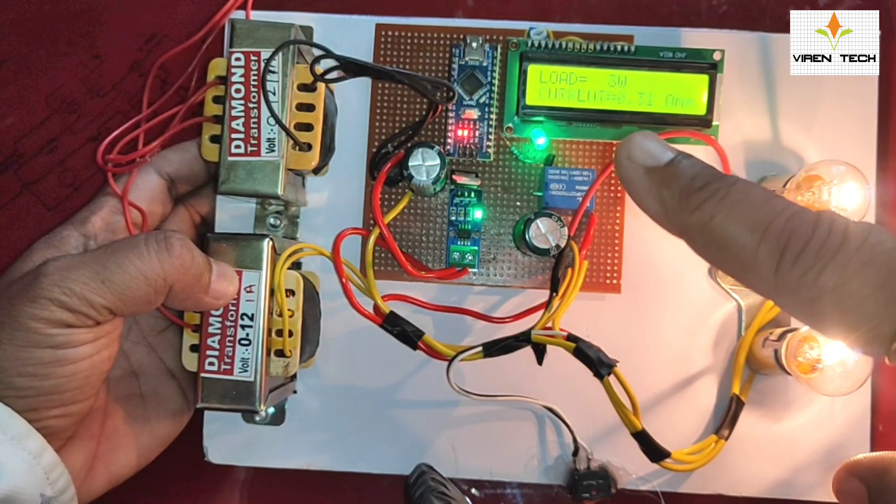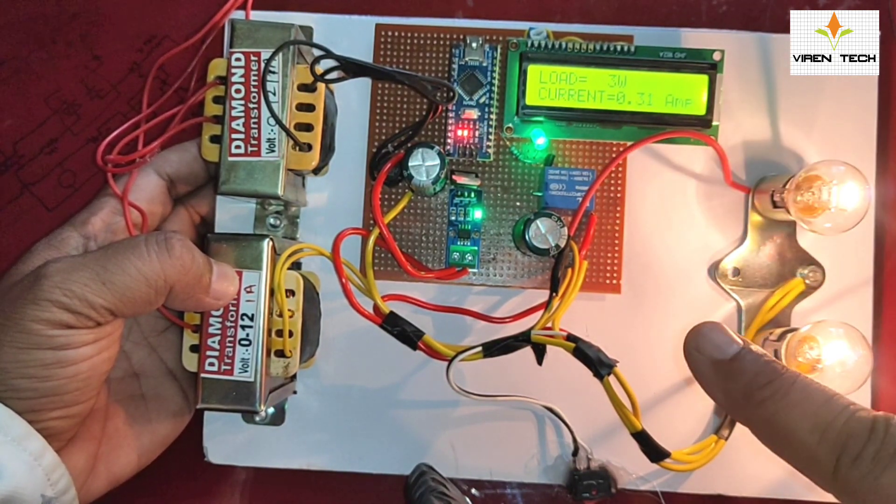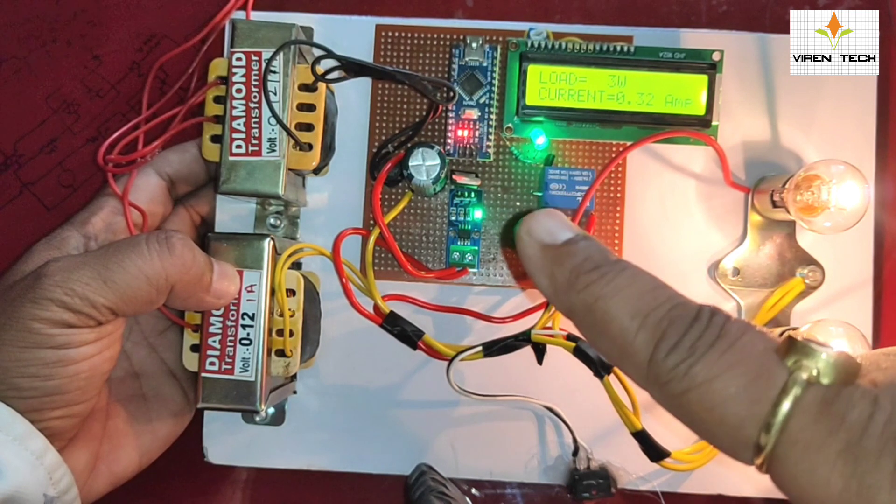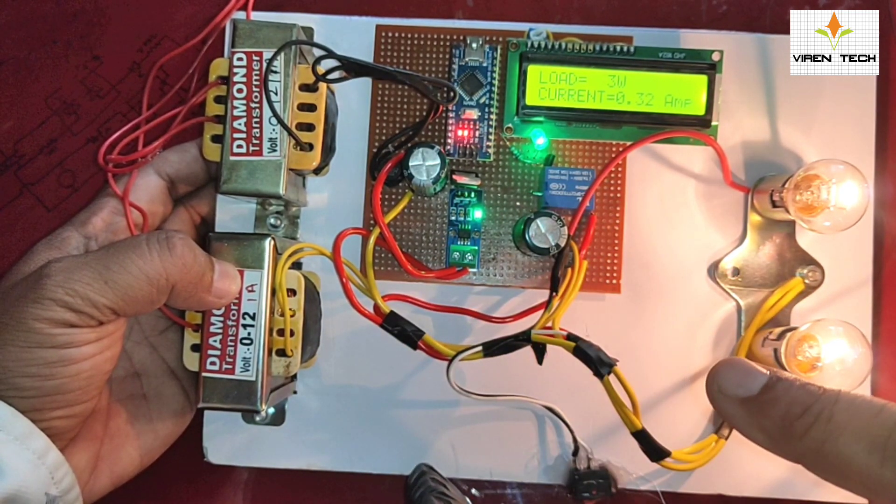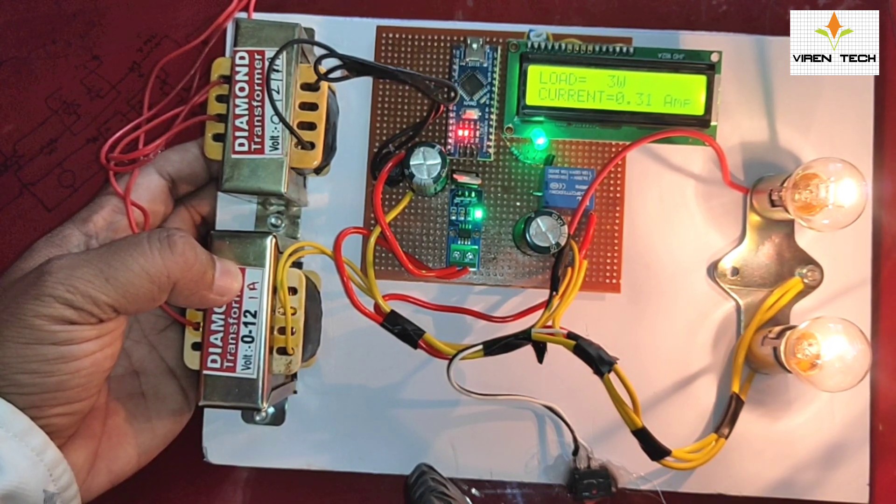As you can see the load increases. So the system has turned on the relay and transformer second will be added into the system and the load will be divided into both transformers.